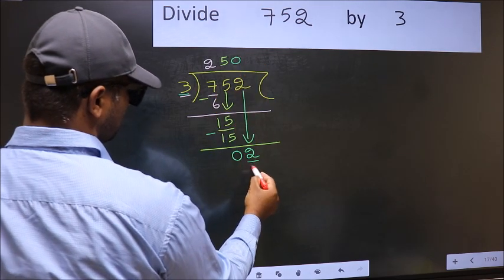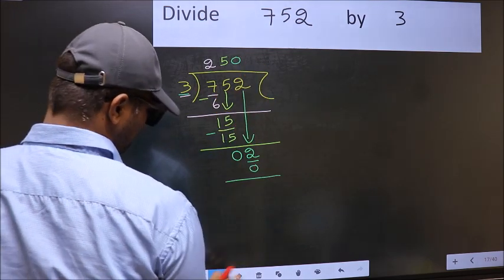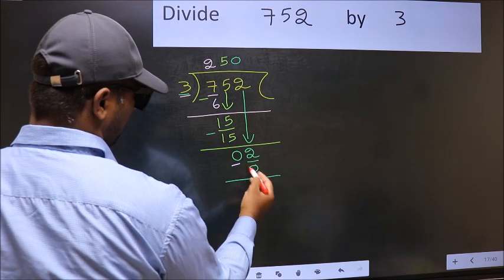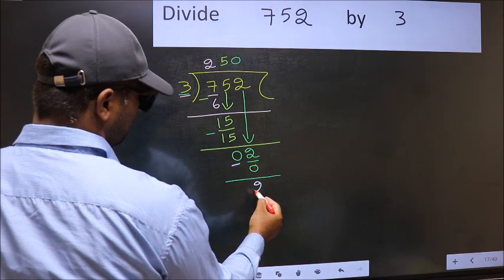So, 3 into 0, 0. Now, you should subtract 2 minus 0, 2.